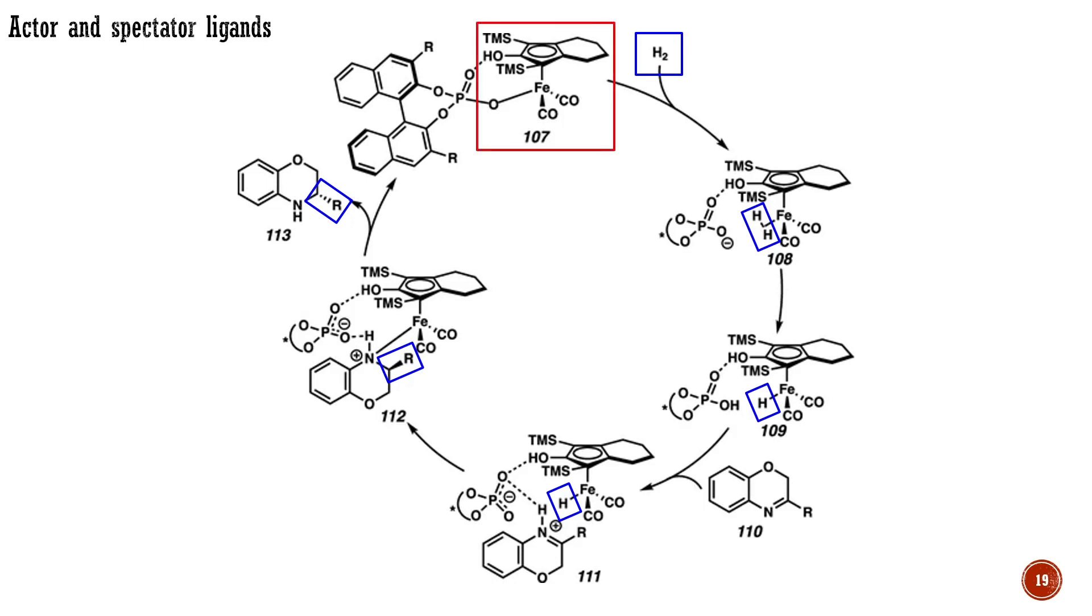For example, the cyclopentadienyl fragment of this iron-based catalyst remains intact. It is a spectator ligand and imparts solubility, stabilizes iron-2 intermediates, and influences the electronic and steric properties of the complex.